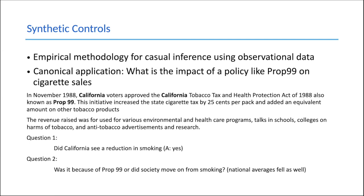The earliest applications were for analysis of policy — to analyze the impact of policy. The canonical application is a policy called Prop 99 in California. In 1988, California voters passed Prop 99, which imposed a 25% tax on every packet of cigarettes sold, and a similar amount on other tobacco products.